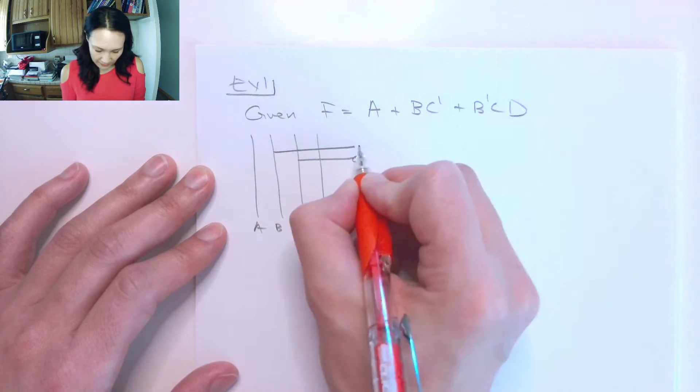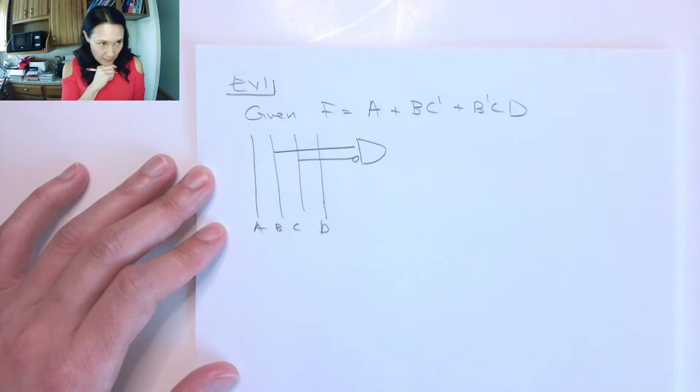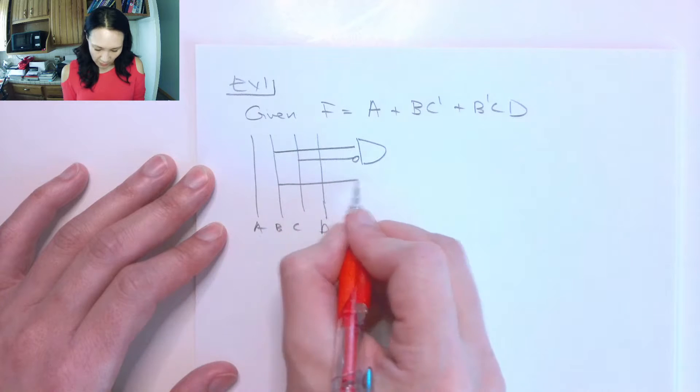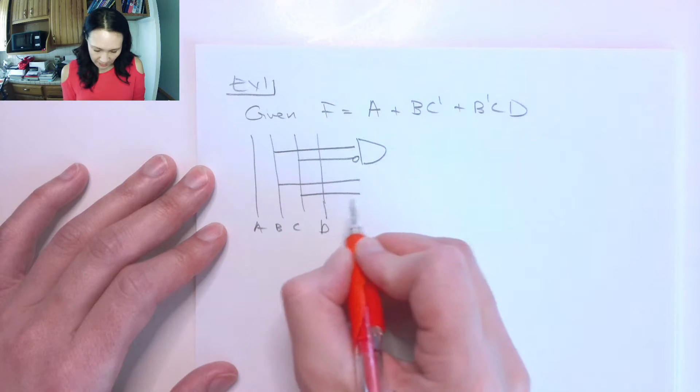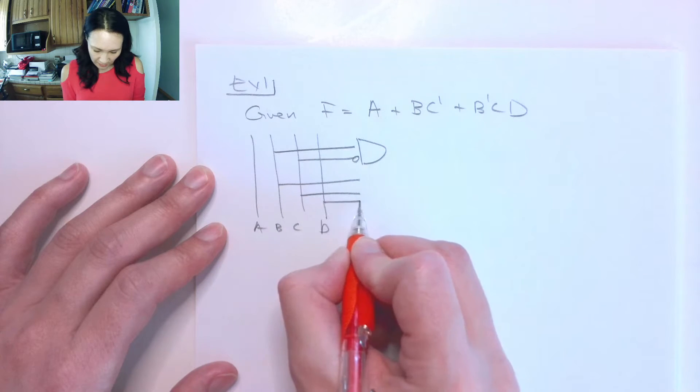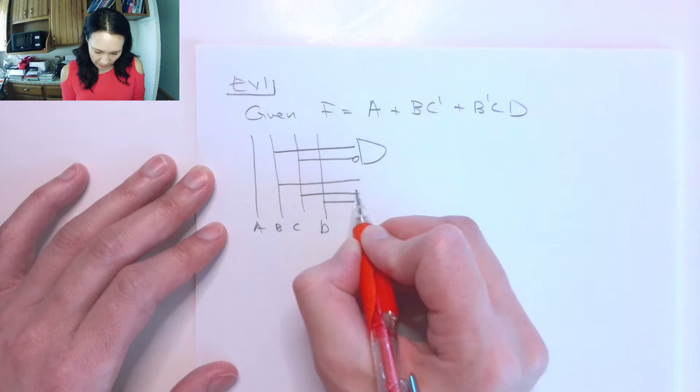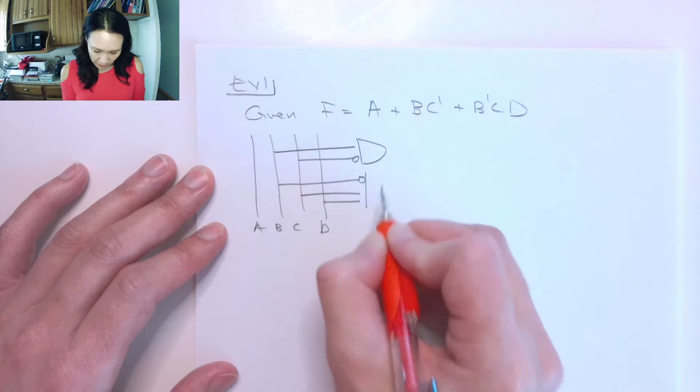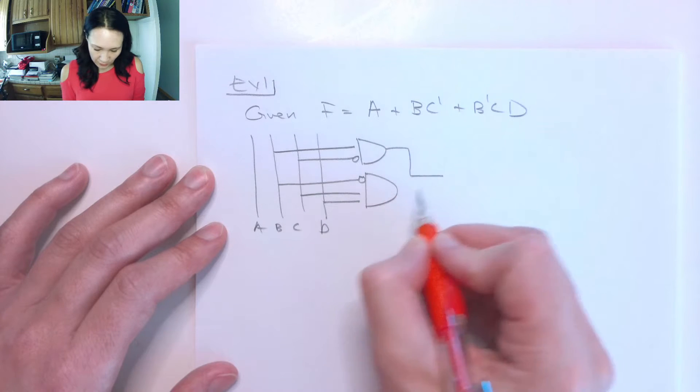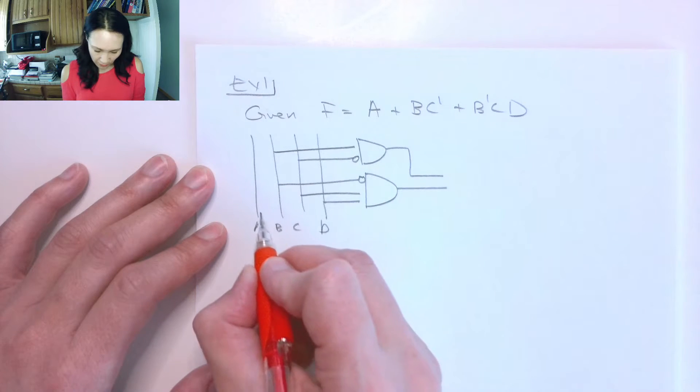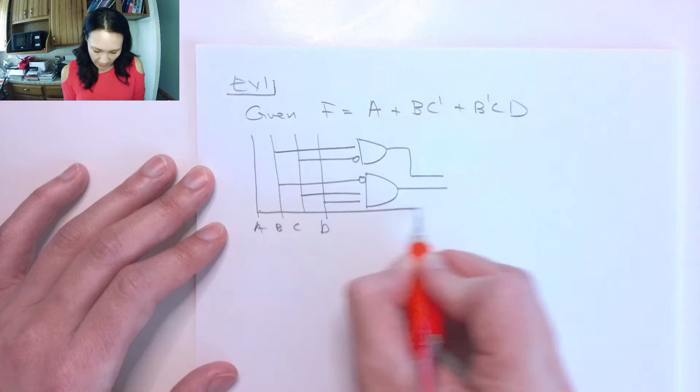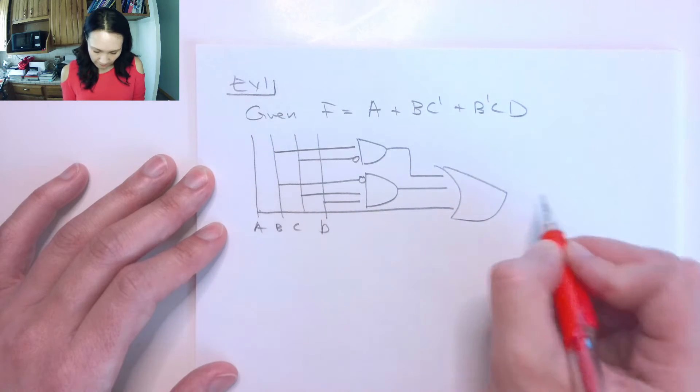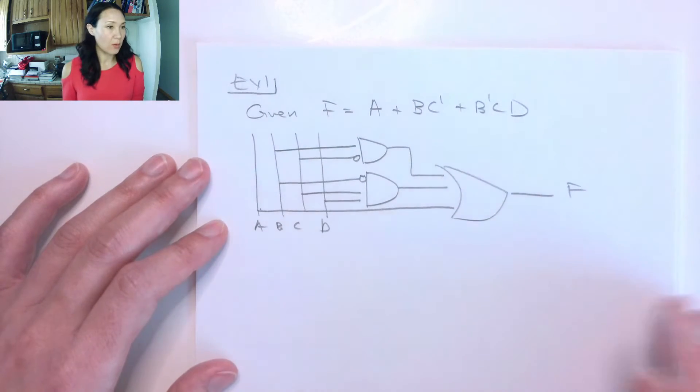And the first thing is I'm going to take A B, a C, I'm going to NOT my C, and then put that into an AND gate. And then I'm going to grab a B, I'm going to grab a C, I'm going to grab a D, I'm going to NOT my B, and then put this into a three input AND gate. These two results I'm going to OR together along with A.